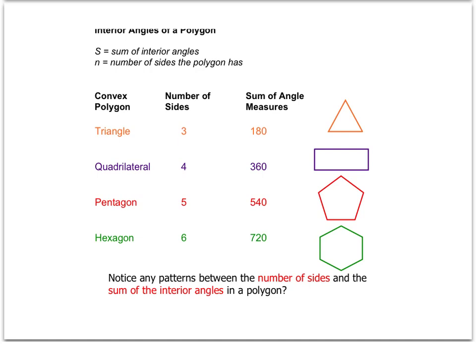We saw that when we had three sides, we had one triangle, and so it was 180 degrees. With four sides, we created two triangles, and two times 180 gave us 360 degrees.